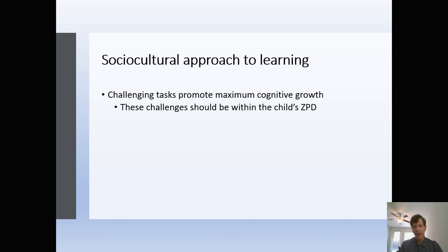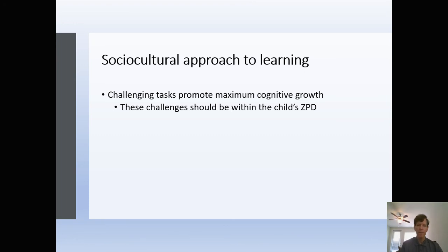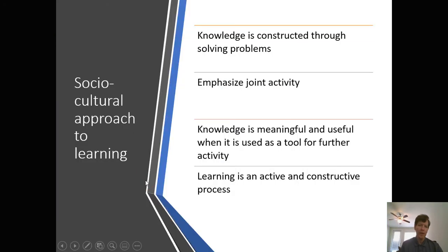What a child can do with assistance today, in the future that child is going to be able to do independently — that's the whole goal. But there's always going to be new room for growth. Take the learning of math skills — that child is going to gain independence at new and increasingly difficult skills, but the learning never necessarily stops. Same thing goes with reading and writing.